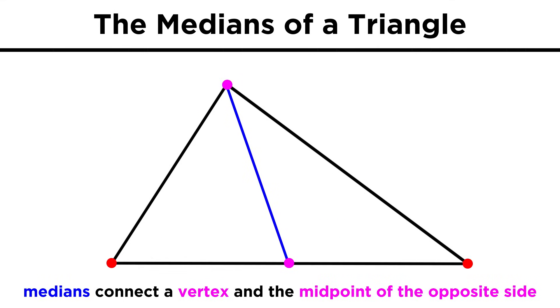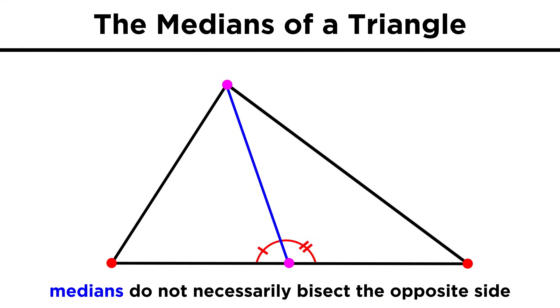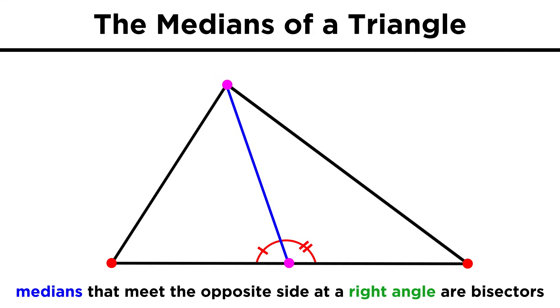Now instead of a bisector, let's look at something called a median. A median of a triangle is a line segment that connects one vertex and the midpoint of the opposite side. Notice that this is not a bisector only because these are not right angles.